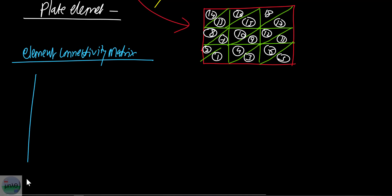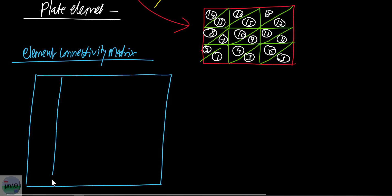The element connectivity matrix is a kind of table. The first column will be the element number and the second will be the global node number. Let's look at the connectivity matrix for the triangular element case.